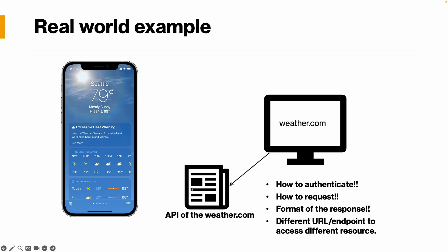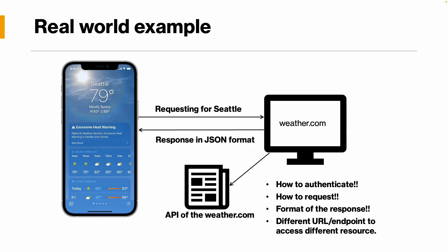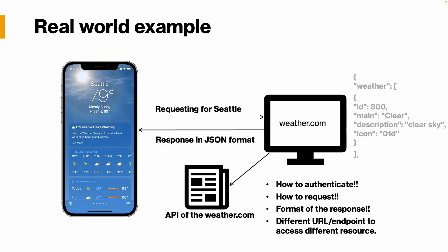Once the weather app reads all this information, authenticates, and sends the request — for example, requesting data for Seattle — weather.com checks the authentication and validates the request format, then sends back the response. In most cases, the response is in JSON format because JSON is very lightweight. The format uses key-value pairs: for example, ID is a key with a value, description is a key with a value like 'clear sky'. This information is returned to the weather app.